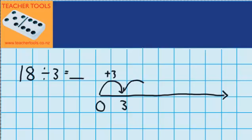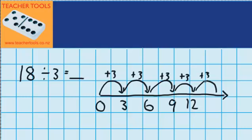My second jump of 3 takes me to 6. My third jump of 3 takes me to 9. Fourth jump of 3 takes me to 12. My fifth jump of 3 takes me to 15. And my last jump of 3 takes me to 18, which is the number I was trying to get to.